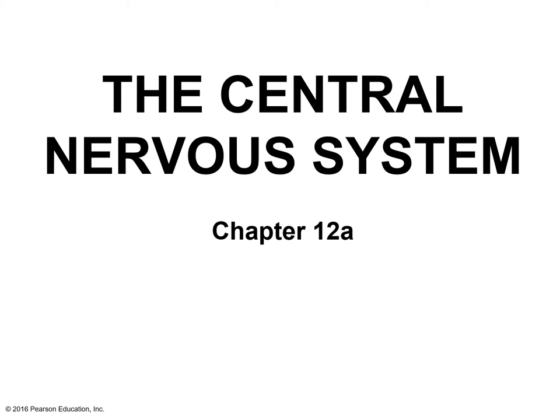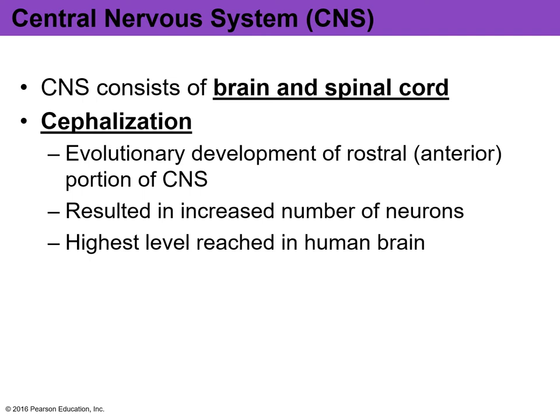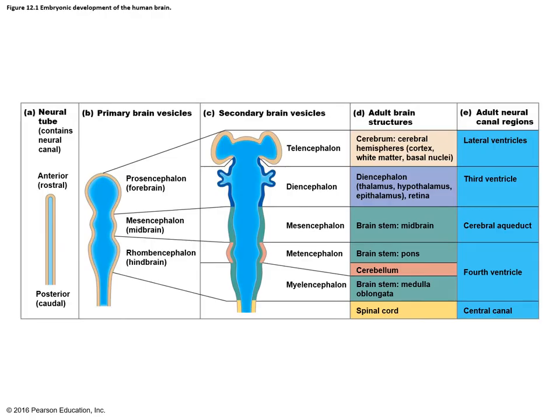This is Chapter 12, Part 1, dealing with the central nervous system. The CNS is comprised of the brain and the spinal cord — just those two components. Cephalization refers to the evolutionary development of the anterior portion of the CNS, which results in an increased number of neurons, with the highest level reached in the brain.